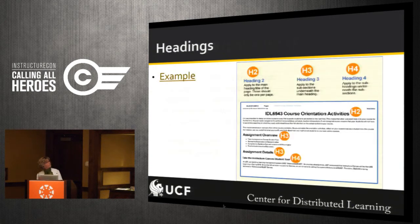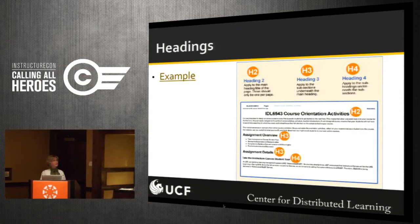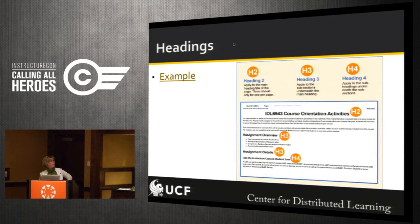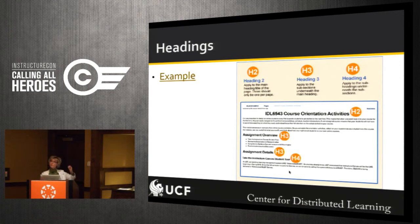The next section is headings. We talked about their importance on the previous page. What you're looking at shows heading 2, heading 3, and heading 4. We teach a faculty development class at UCF for people who want to teach online. This image helps faculty understand what headings are and how to use them. The title would be a heading 2, section headings would be heading 3, and subsections within a section would be heading 4.